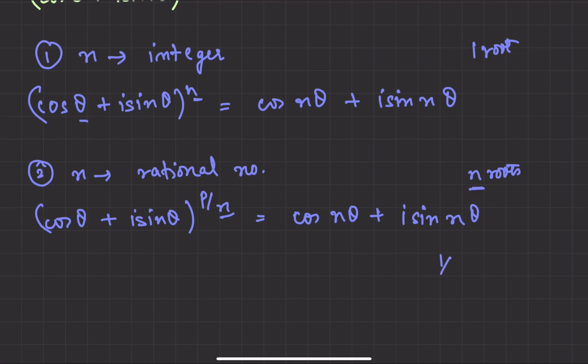Look, if we have 1 by 3, then how many roots exist? 3. If we have 2 by 4, then 4 roots exist? No. It has to be in the reduced form. So we will make this 1 by 2, and therefore 2 roots exist. Similarly, 3 by 4, then we will have 4 roots exist. This is the condition: it should be in the reduced form. The denominator in reduced form gives us the number of roots that exist.